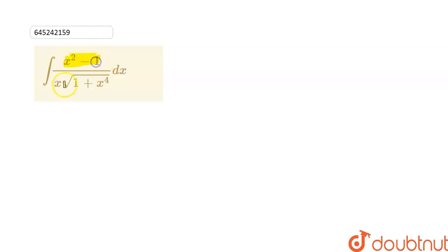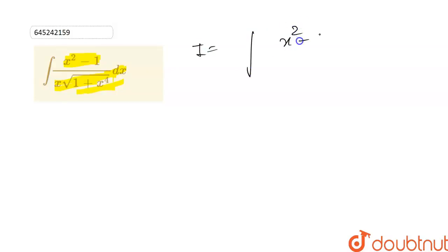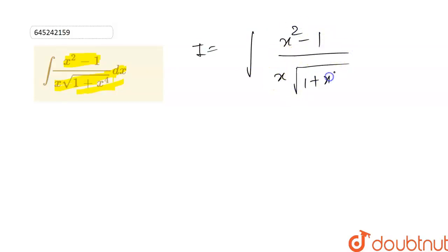The given question is: solve the integration of (x² - 1) divided by x into under root of 1 plus x to the power 4, dx. So let's solve this integration. Our integration I is given as ∫(x² - 1) / (x · √(1 + x⁴)) dx.